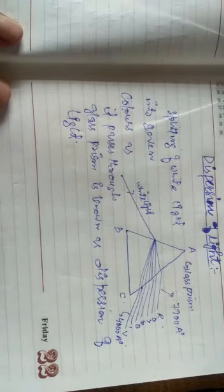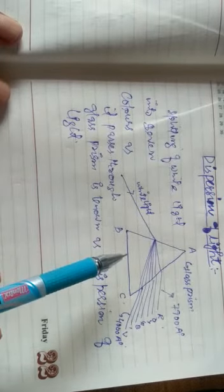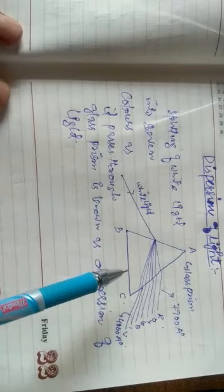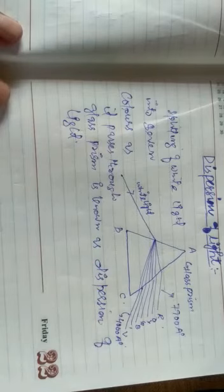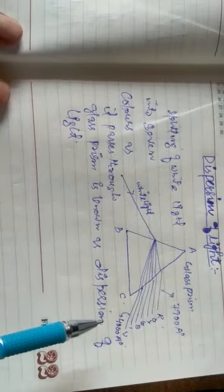Now the question is: what is the cause of dispersion? The cause of dispersion is that there are seven different colors, the wavelengths of different colors of light are different, and the refractive index of glass is different for different colors. The wavelength of red color is longest and the wavelength of the violet color is shortest.